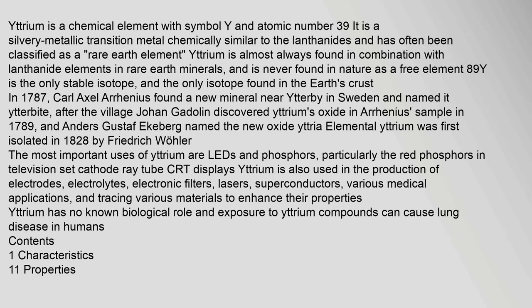Yttrium is a chemical element with symbol Y and atomic number 39. It is a silvery metallic transition metal chemically similar to the lanthanides and has often been classified as a rare earth element. Yttrium is almost always found in combination with lanthanide elements in rare earth minerals, and is never found in nature as a free element.